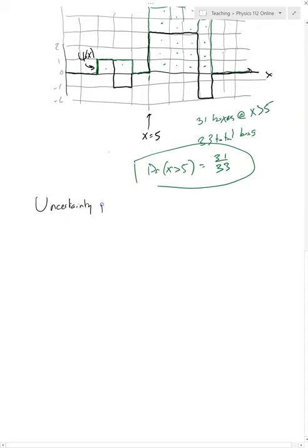This may be something that you've heard about before. This is Heisenberg's uncertainty principle. Now it says that delta x delta p is equal to h bar over 2. So what's that mean?